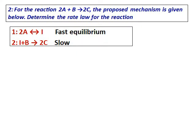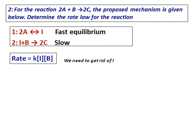For the reaction 2A + B → 2C, the proposed mechanism is given. Determine the rate law. The first step is 2A → I (fast equilibrium), and the second step is I + B → 2C (slow step). I is an intermediate. Writing the rate equation from the slow step: rate = K[I][B].